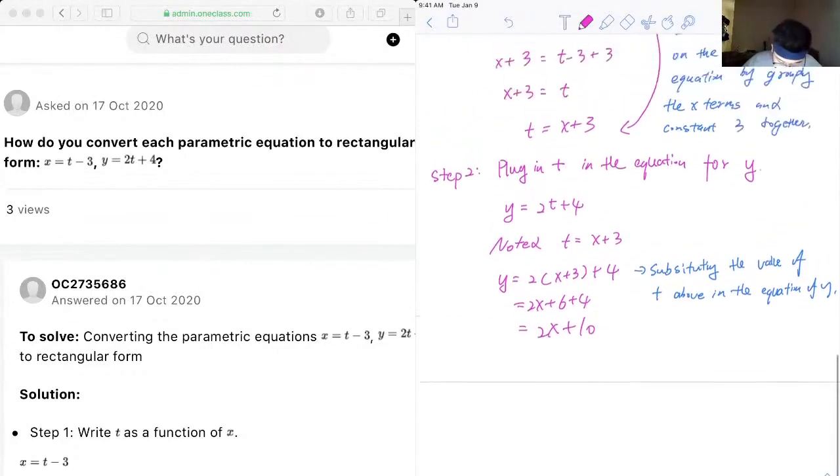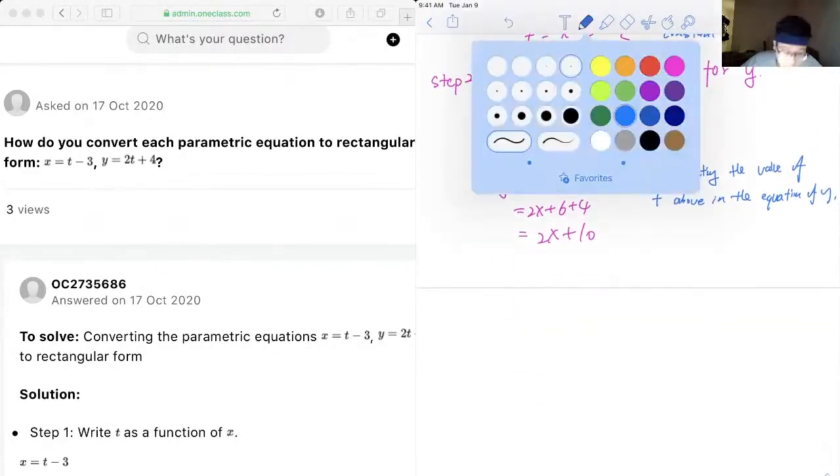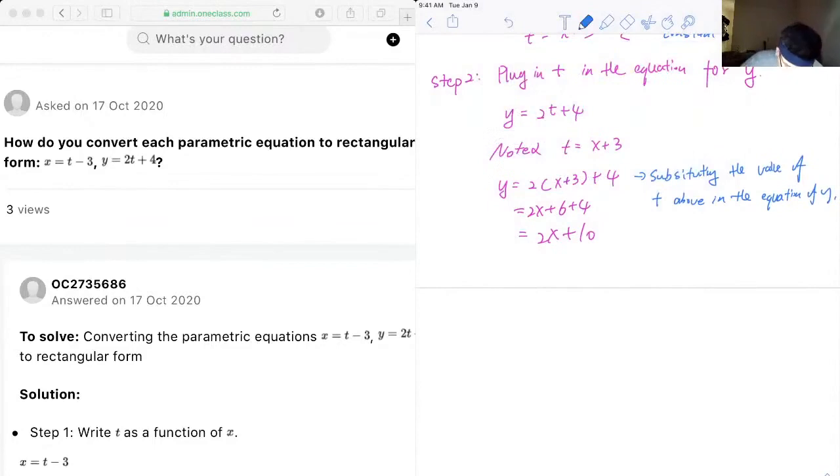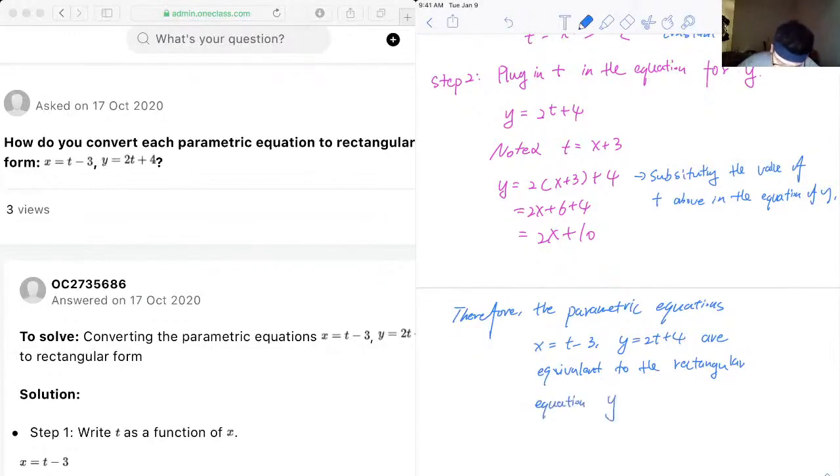Yep, so I think that's all we have for this question. And now we can write the conclusion. Therefore, the parametric equations x equals t minus 3, y equals 2t plus 4, are equivalent to the rectangular equation y equals 2x plus 10. Okay.